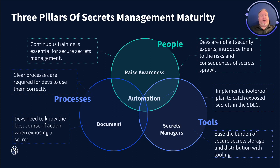This is one area where the GitGuardian internal monitoring platform really shines. We're not just a set of tools — we can also provide you guidance to help you set the right processes in place. Achieving automation means you can reach the highest levels of secret management maturity.